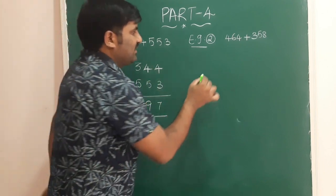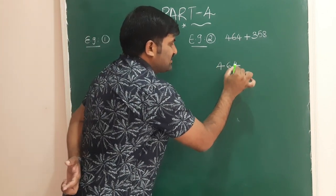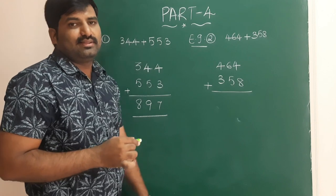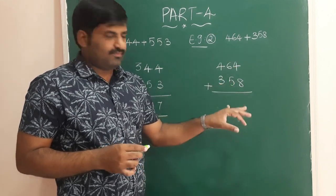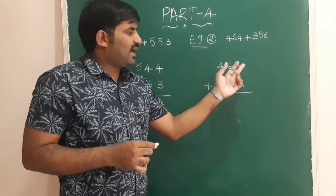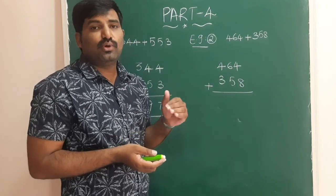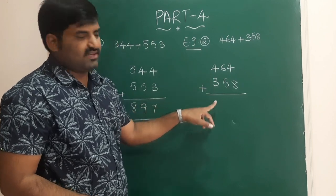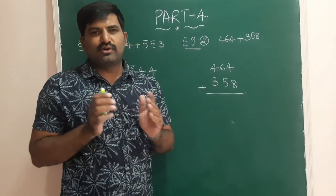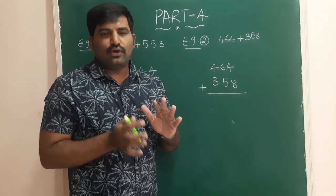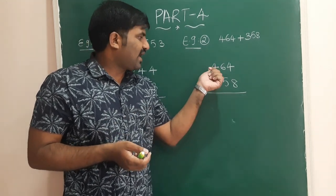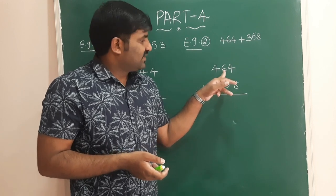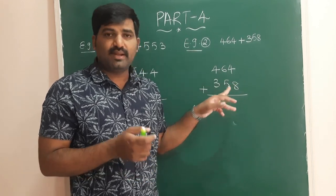Now the second example: 464 plus 358. These are two three-digit numbers and the sum is also a three-digit number. Here you will encounter carry numbers — see how to add two three-digit numbers with carry. First, 4 plus 3 is 7. Keep 7 in mind; do not write it yet. Before writing, check the next two digits: 6 plus 5 — is it carry or non-carry?